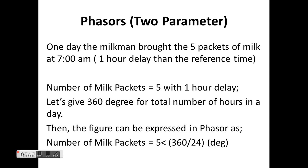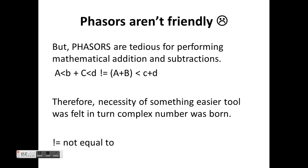That is about one hour delay from the reference time chosen previously. The number of milk packets is equal to five with one hour delay. If we assume that the number of hours in a day is depicted with 360 degrees, then this can be expressed in phasor form as five angular 360 divided by 24 degrees.